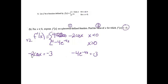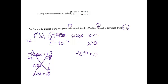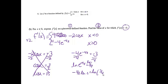Solving both for x: from the first equation, cosine x equals 3/2, which equals 1.5. When you take the cosine of something, you cannot get a value bigger than 1, so that can't work. For the second equation, dividing by negative 4 gives e to the negative 4x equals 3/4. Taking the natural log of both sides: negative 4x times ln e equals ln of 3/4.